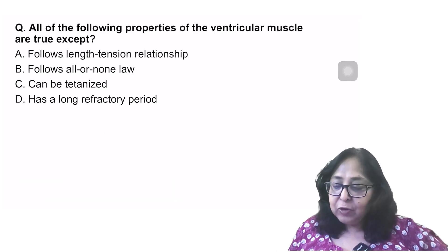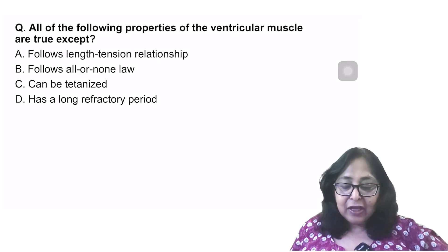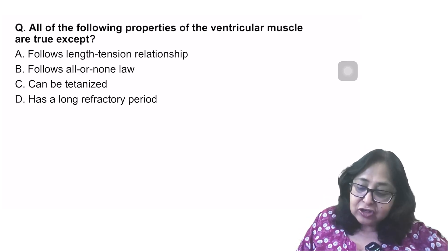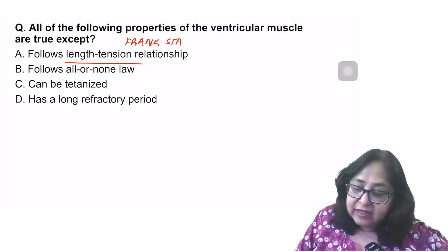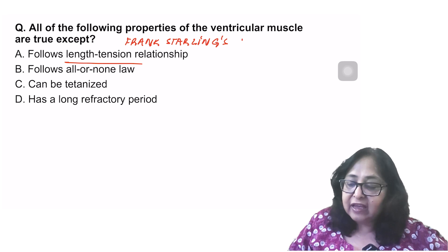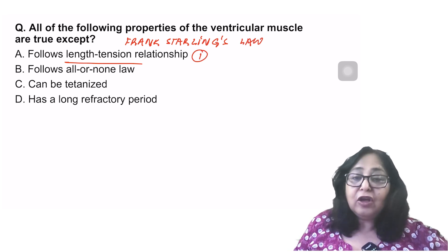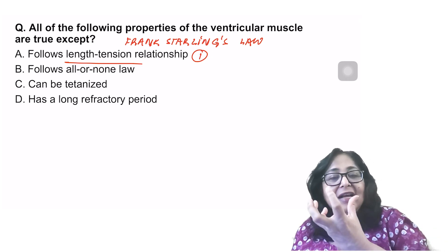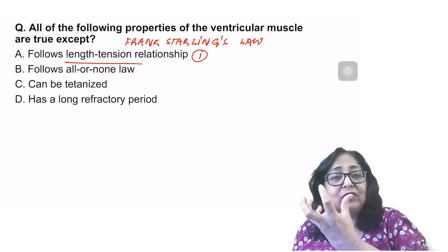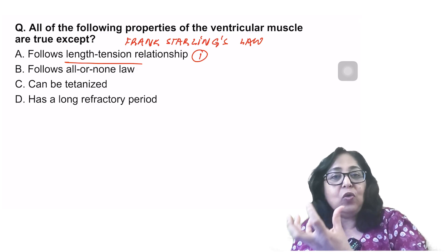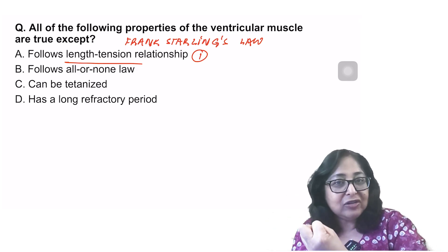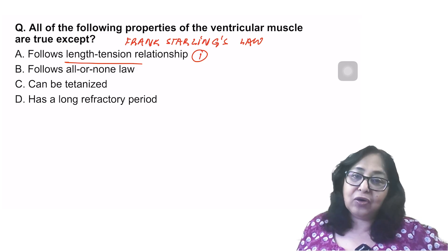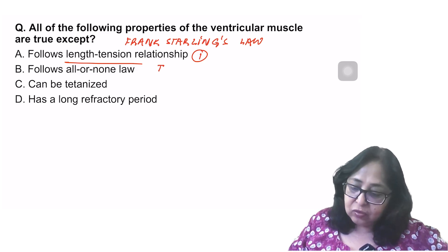All of the following properties of the ventricular muscle are true except: follows the length tension relationship, which is true. Frank Starling's law. More the initial length, more the tension generated up to a physiological limit. This is true. Follows all or none law. That is also true. The heart, the ventricle muscle or the ventricle, follows all or none law. Either the complete ventricle will contract or there will be no contraction. So this is also true.